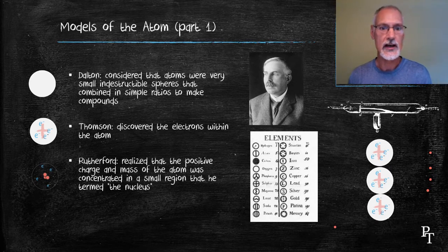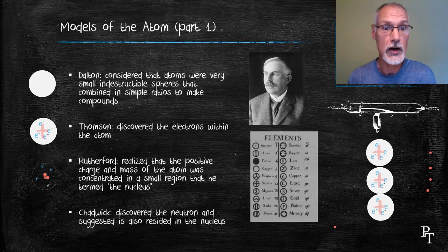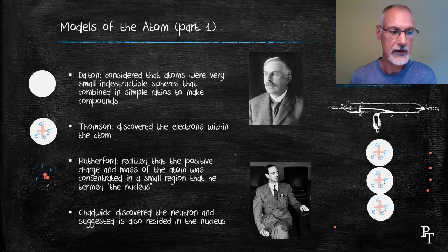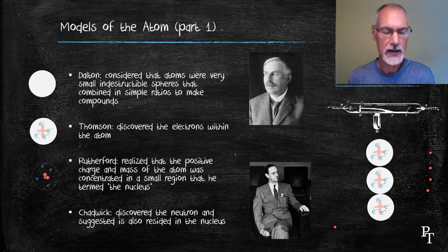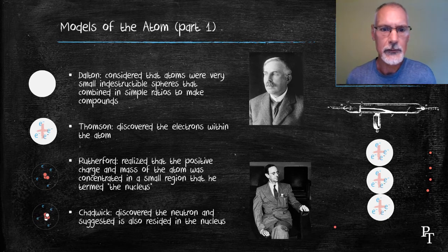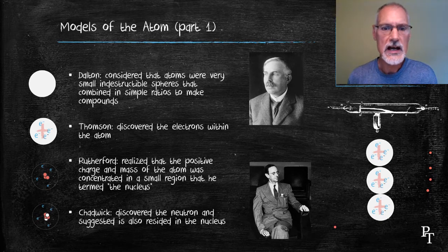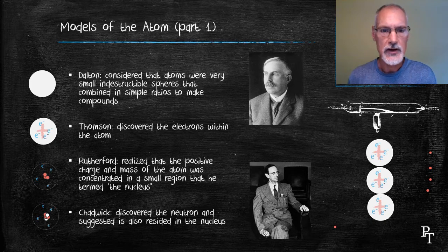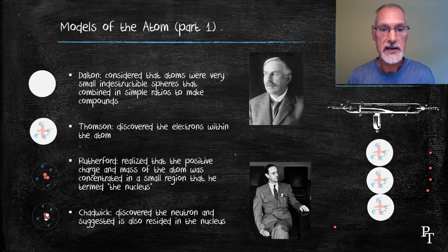Later, the work of the scientist Chadwick in the 1930s deduced another particle also resided in the nucleus, and that was called the neutron. This leads to what we sometimes call the beehive model of the atom, where the hive would essentially result in what's called the nucleus, and the bees would be the electrons buzzing around outside.